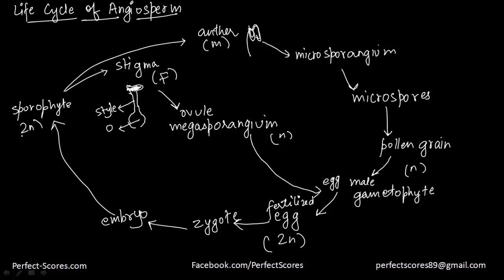Everything up to fertilization is haploid; the fertilized egg is diploid. The embryo develops into a new sporophyte, which is also diploid. That is the life cycle of an angiosperm. In angiosperms, both haploid and diploid cells have the ability to divide by mitosis, which leads to formation of different kinds of plants. On the basis of this, we are going to discuss three different kinds of life cycles: haplontic, diplontic, and haplodiplontic.